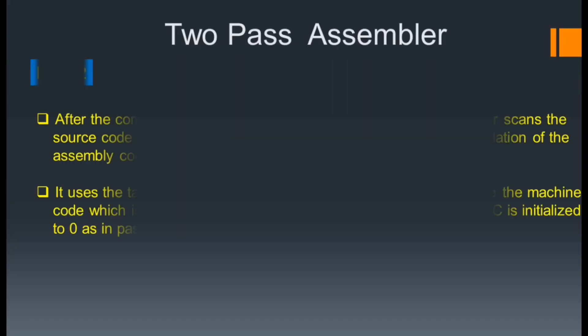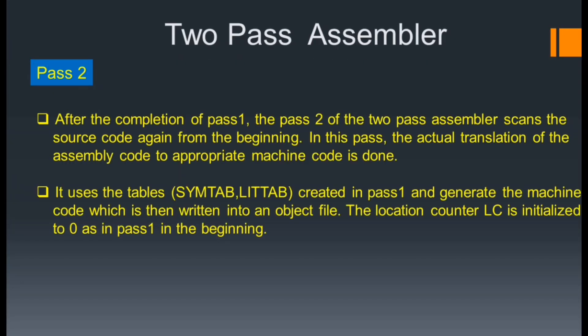After completion of Pass 1, Pass 2 of the two-pass assembler scans the source code again from the beginning. In this pass, the actual translation of the assembly code to appropriate machine code is done. It uses the symbol table and literal table created in Pass 1 and generates the machine code, which is then written into an object file. The location counter is initialized to zero at the beginning of Pass 2.